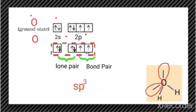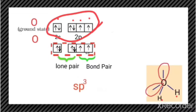Two electrons are there in 2s and there are four electrons in 2p orbital. In the ground state itself there are two unpaired electrons, and we know that in water two hydrogen atoms are there. So already two unpaired electrons, that is singly occupied electrons, are there. So there is no need of excitation — it does not involve the promotion of electrons. So from these orbitals, the s orbital and the 3p orbitals undergo hybridization to form four sp3 hybrid orbitals.